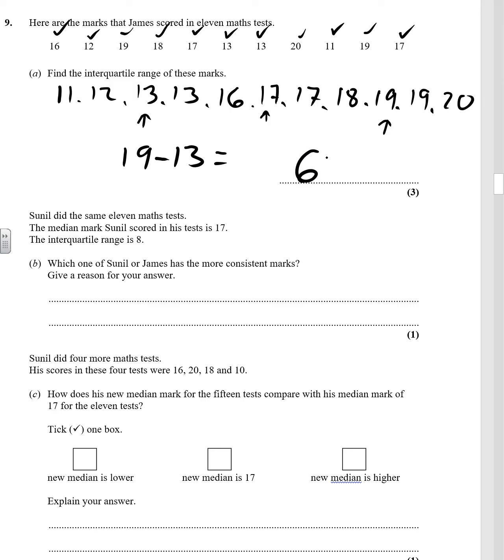Right, next question. We've got a median mark of 17, interquartile range of 8. So his interquartile range is bigger. Median is actually the same. Which one has the more consistent marks? Well, you want a lower interquartile range.